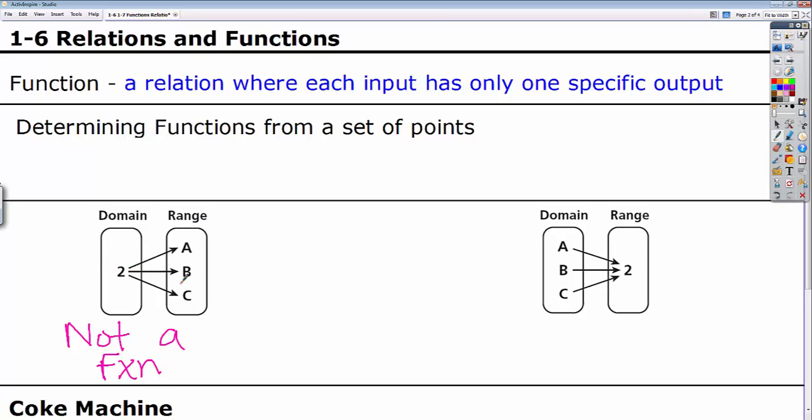Each input is only allowed to have one specific output. If we take a look over here, this one actually is a function. Because the input A has an output of 2. The input B has a single output 2. The input C has a single output 2. They all have the same output, but each one is a specific one to that input value.